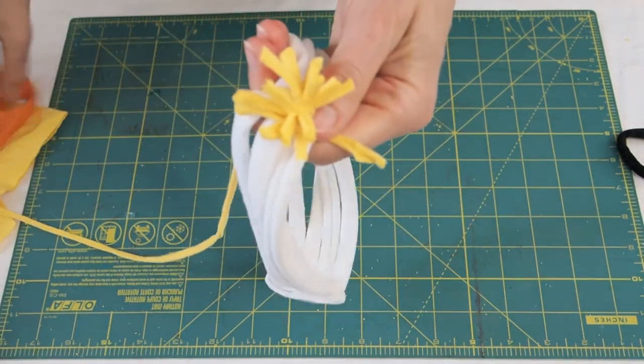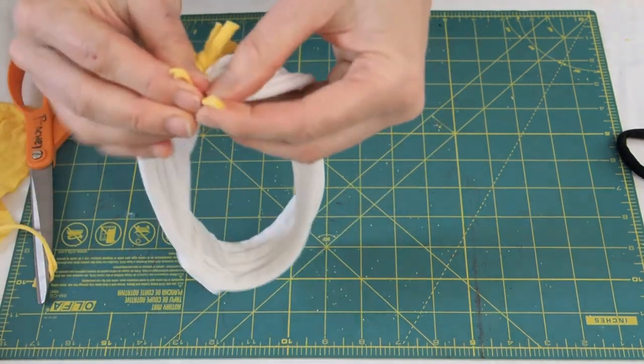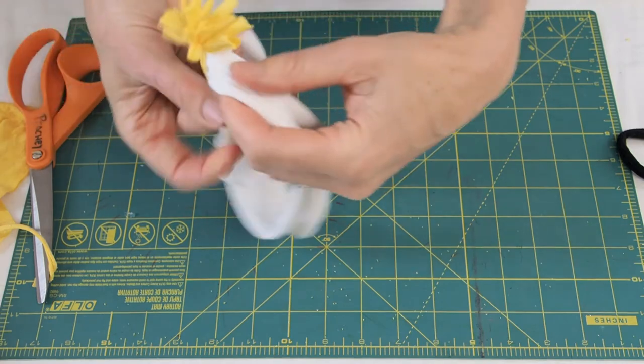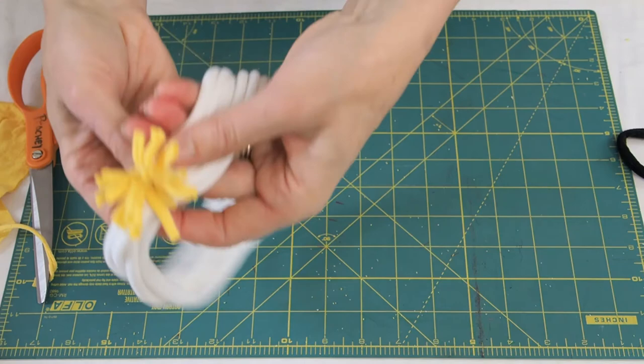Then I'm going to decide where I want it on my headband. I usually don't center it. I just put it a little bit off center. And then we tie it onto the headband. Sorry that I went off screen there a little bit, but there you go. You can see the pom pom on there.